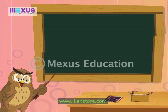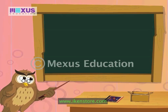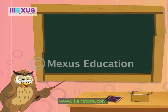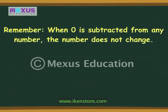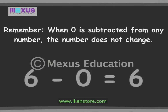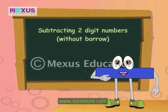There is one more thing that you should remember. When zero is subtracted from any number, the number does not change. For example, six minus zero is six.